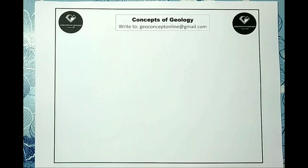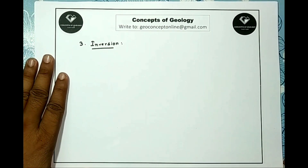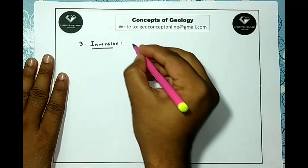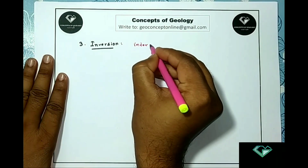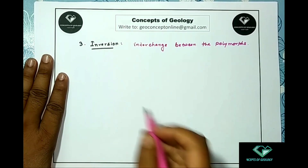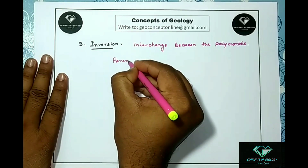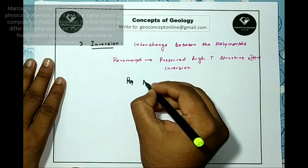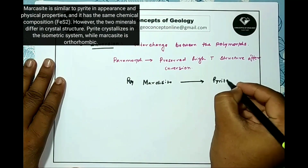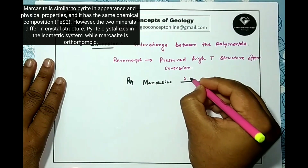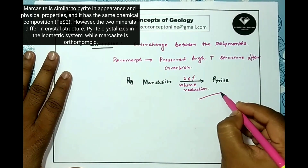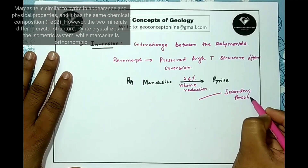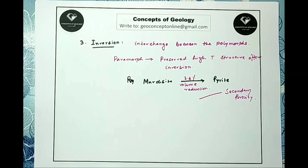The next effect of cooling that can modify a primary texture is inversion — the interchange between polymorphs. Often the structure of the high-temperature polymorph is preserved after inversion; these are called paramorphs. For example, when marcasite inverts to pyrite upon cooling, a volume reduction of up to 2.6% may occur, creating a small pore in the rock called secondary porosity.